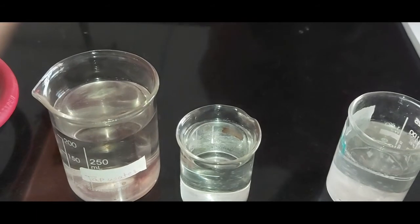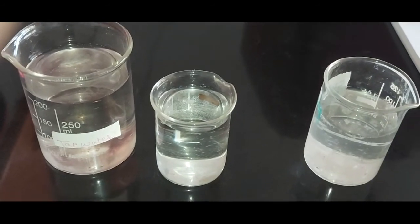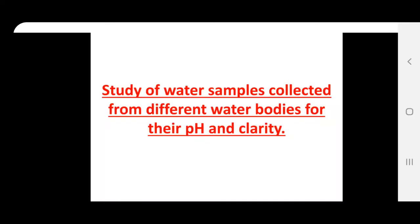These are the two experiments under one heading: the study of pH of given water samples and their clarity. After performing the experiment, we will see how to write the observation table for the study of water samples collected from different water bodies for their pH and clarity. In the board practical exams, we are supposed to prepare two separate observation tables, results, and conclusions — one for pH and one for clarity.